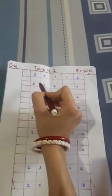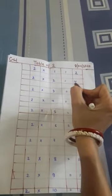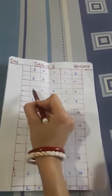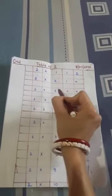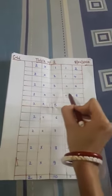Then again write down 2×2=4. Leave this box. Then again write down 2×3=6. 2×4=8. 2×5=10. 2×6=12. 2×7=14. 2×8=16. 2×9=18. 2×10=20.